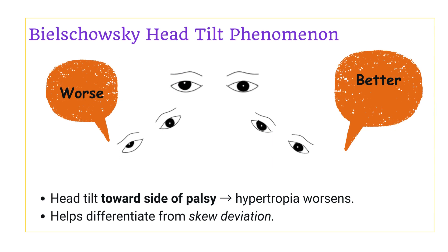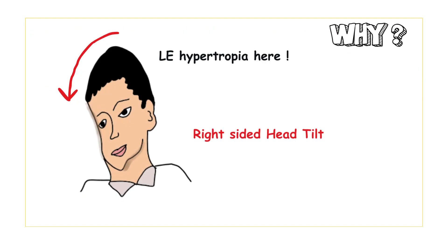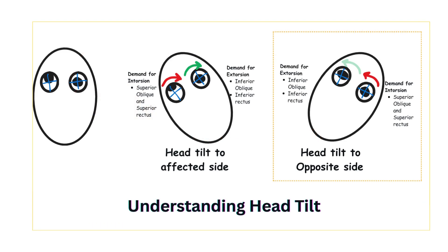This overaction of the superior rectus worsening hypertropia forms the basis of the Bielschowsky head tilt phenomenon, which states that in a patient with hypertropia, tilting the head towards the affected side increases the vertical deviation. Therefore, to avoid this worsening, the patient tilts the head towards the opposite, normal side. When the head is tilted towards the normal side, the affected eye requires extorsion. The extorsors — inferior oblique and inferior rectus — are both normal and balance each other without producing significant vertical deviation, so the superior oblique is not required in this position.